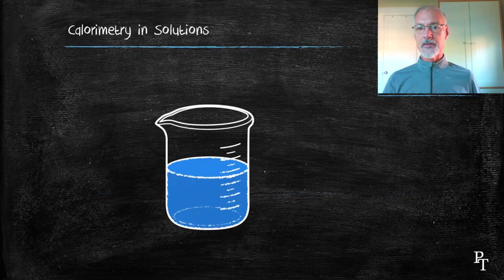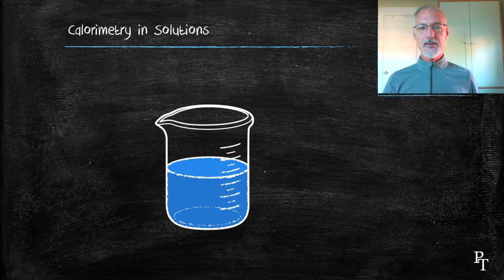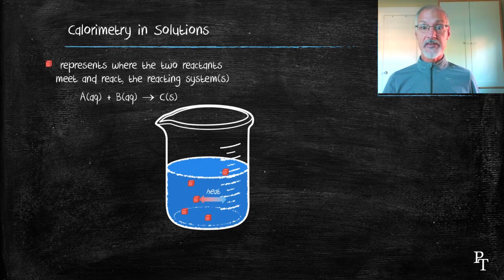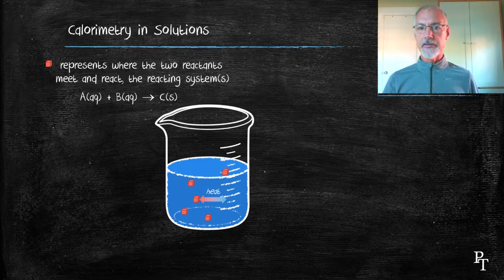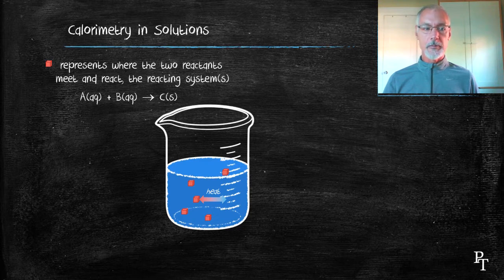When we conduct calorimetry experiments in a solution, what we can visualize is that the reaction takes place, or the reacting system, is a series of boxes or cubes, and inside those boxes, that's where our two reactants get together and generate their heat, or absorb their heat.